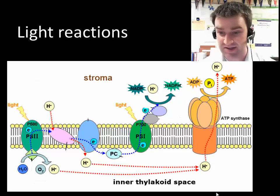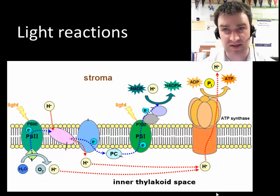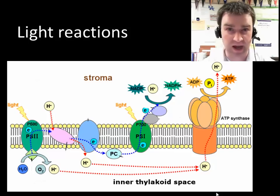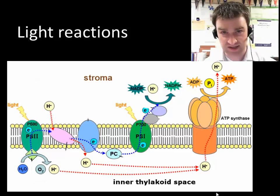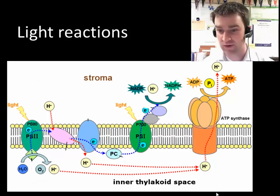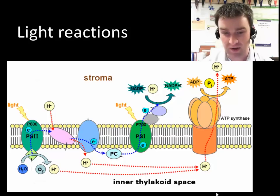Here is that picture. We see that there are two photosystems that sort of work in pairs with each other. There are actually lots of copies of these proteins throughout the thylakoid membrane — they're only showing you two here, but all of them work in pairs.